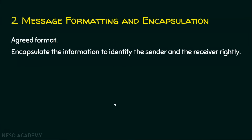The second element of the protocol is message formatting and encapsulation. Both sender and receiver must mutually agree upon certain formats, which we call formatting. At the same time, when the receiver gets some data, it should identify who sent it. So we add information with the data — source information and destination information — in order to identify the sender and the receiver. We encapsulate these things with the data so that the right sender and receivers are identified.